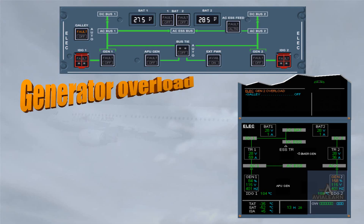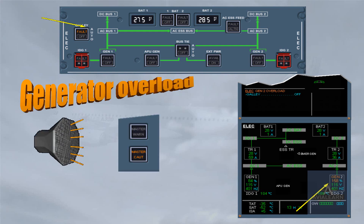Let's assume we are in flight and a gen 2 overload fault just occurred. Observe the gen load indications in amber on the ECAM electrical page, indicating that the load is abnormal. The galley fault light comes on the electrical panel, helping you to locate the switch. The galley will be switched off to reduce the load.